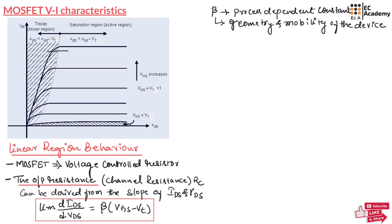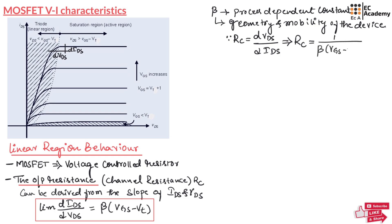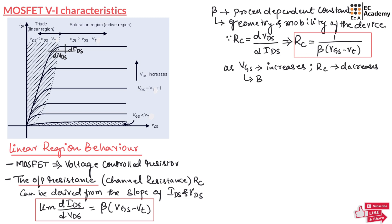For example, taking the slope on the curve along the x-axis and y-axis: delta VDS (DVDS) and delta IDS (DIDS). We can write the limit of DIDS divided by DVDS equals beta times VGS minus VT. Since RC equals DVDS divided by DIDS, we get RC equal to 1 divided by beta times VGS minus VT. This formula shows that as VGS increases, the channel resistance decreases, and the channel resistance is inversely proportional to VGS minus VT.